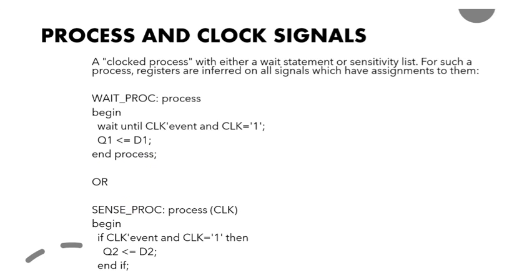Now here is how to give the clock as the sensitivity list of a process — again with an optional label. Process(clock): begin, if clock'event and clock equals 1 then q2 equals d2, end if, end process. Here the clock is given in the sensitivity list instead of the wait statement. These are the two ways to write process and clock signals.